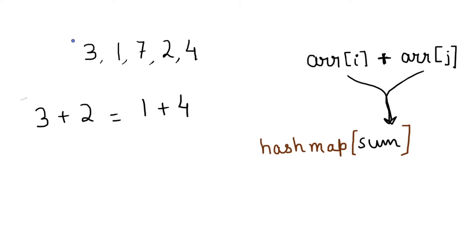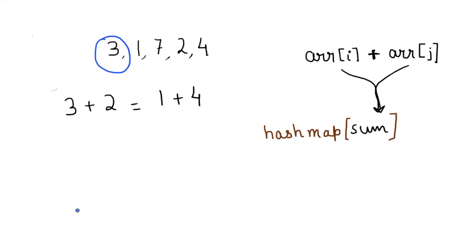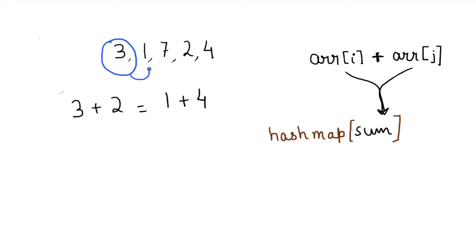I will start with number three and try to find all pairs and do a summation. To start with, I will sum three and one, that is four, then three and seven, that is ten, three and two, that is five, and three and four, that is seven. Now I will move my pointer to the next element, that is one.